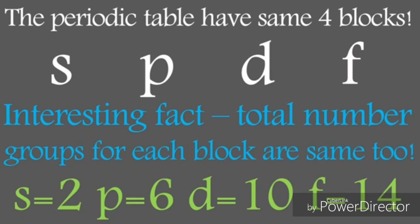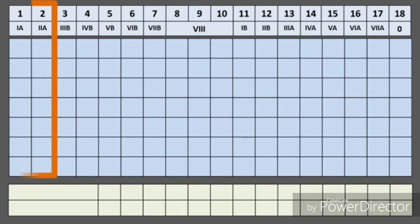The s-block is located on the left side. Its groups take letter A and are arranged in two groups: 1A and 2A. Then we have the p-block.